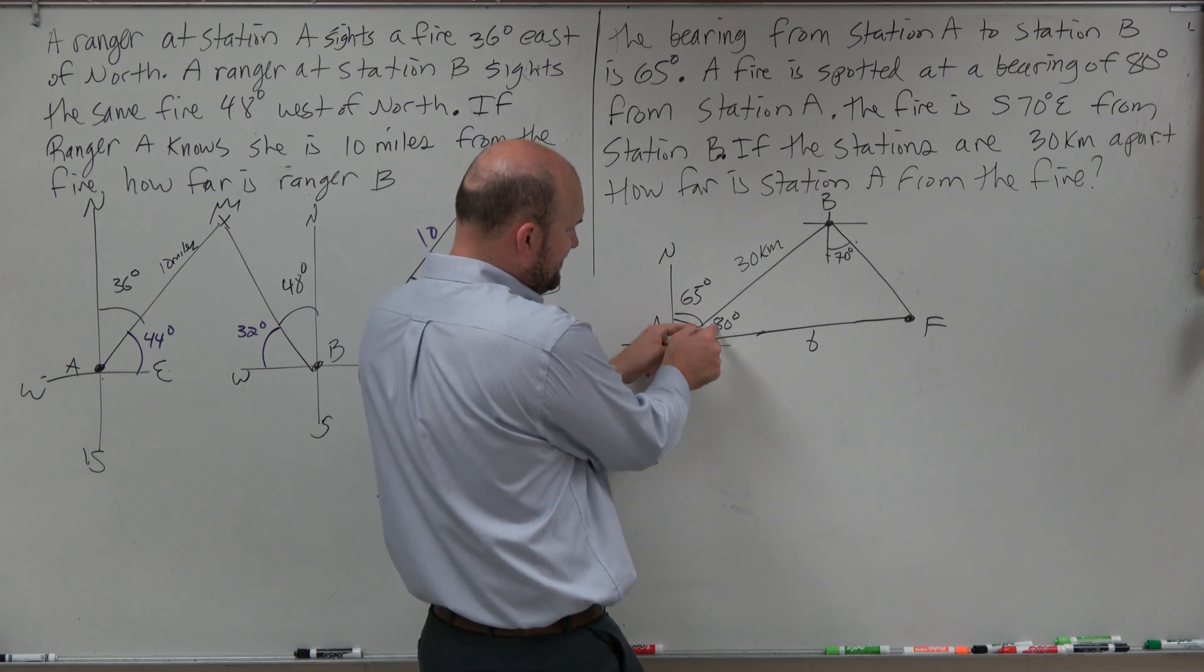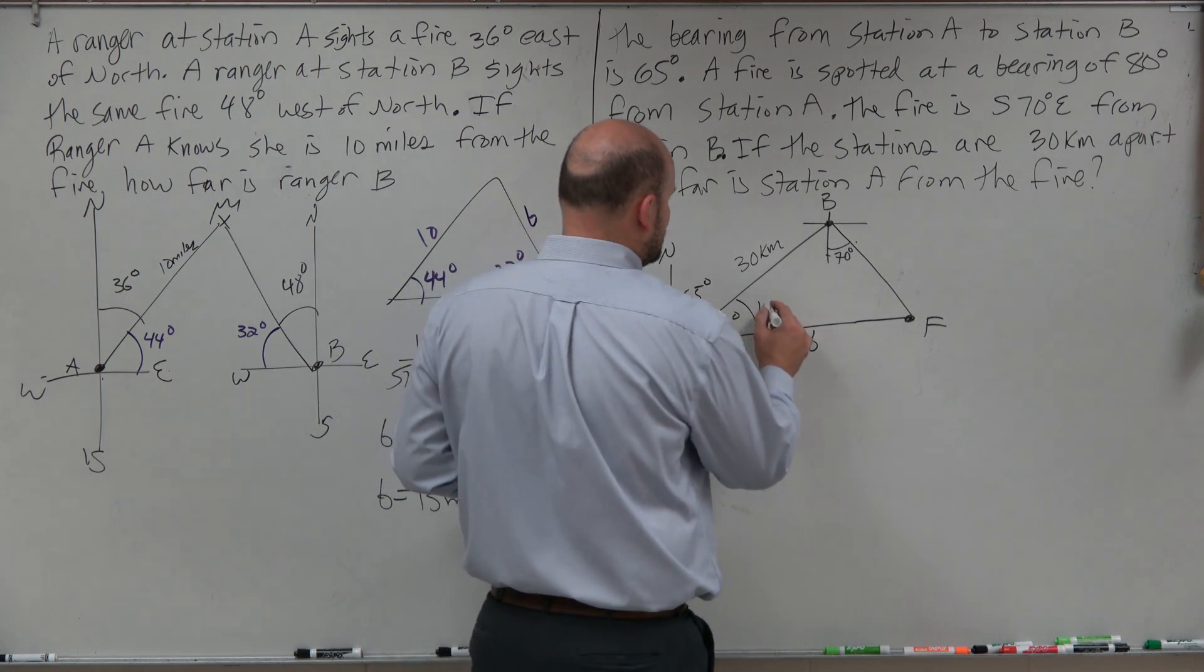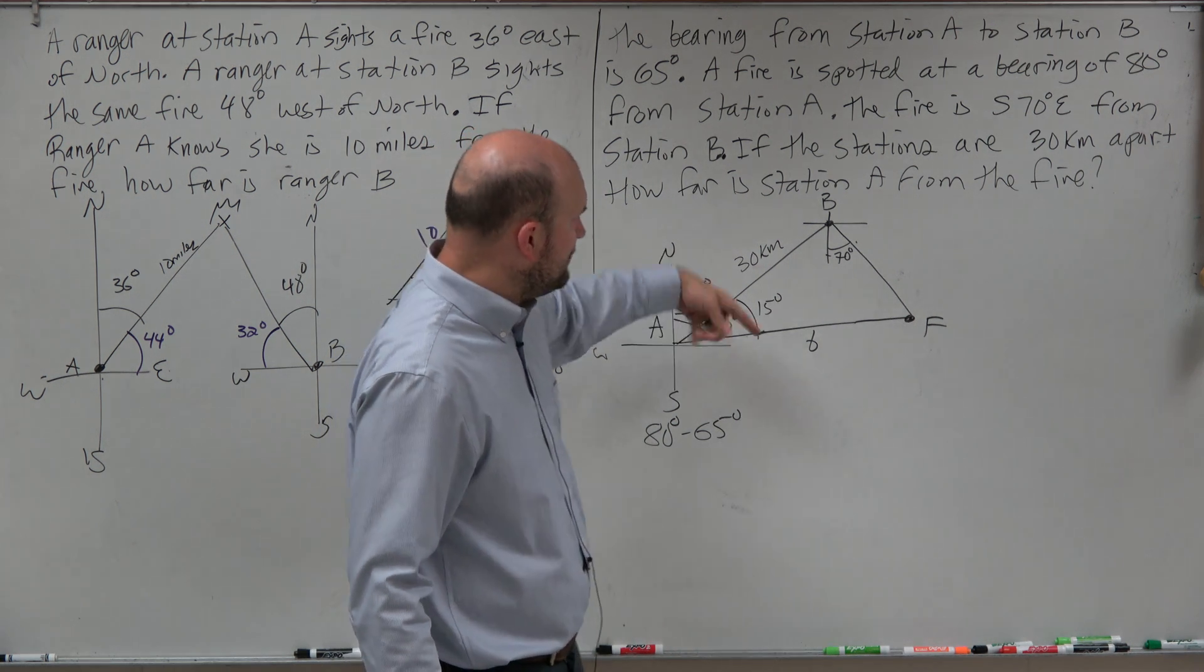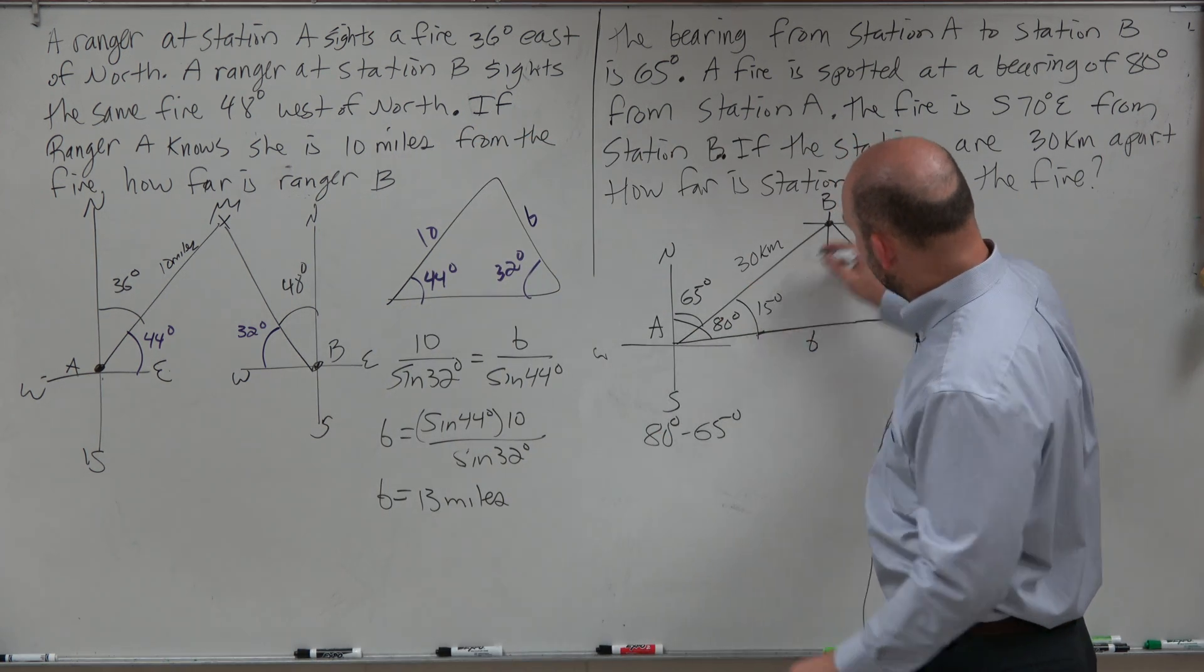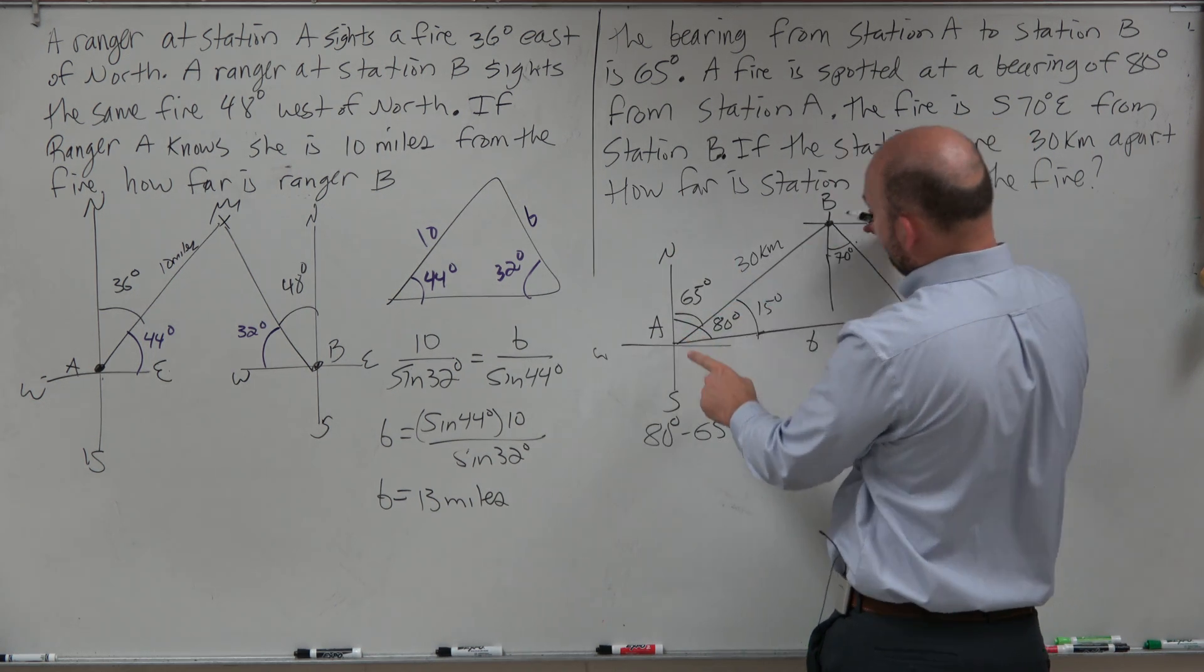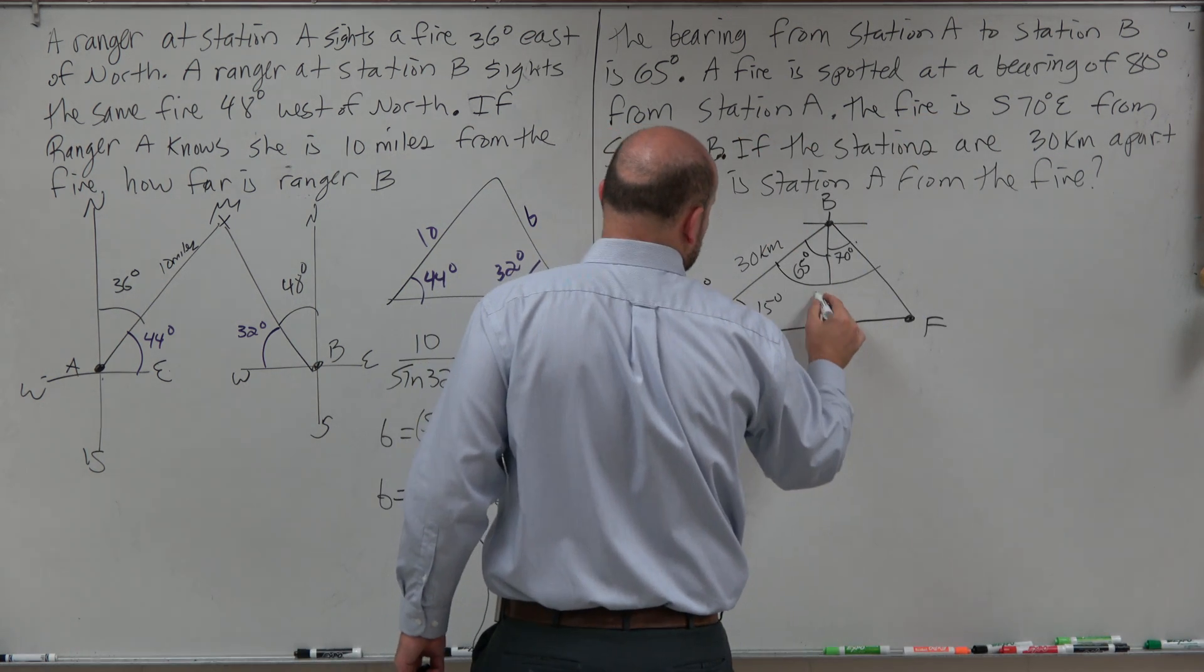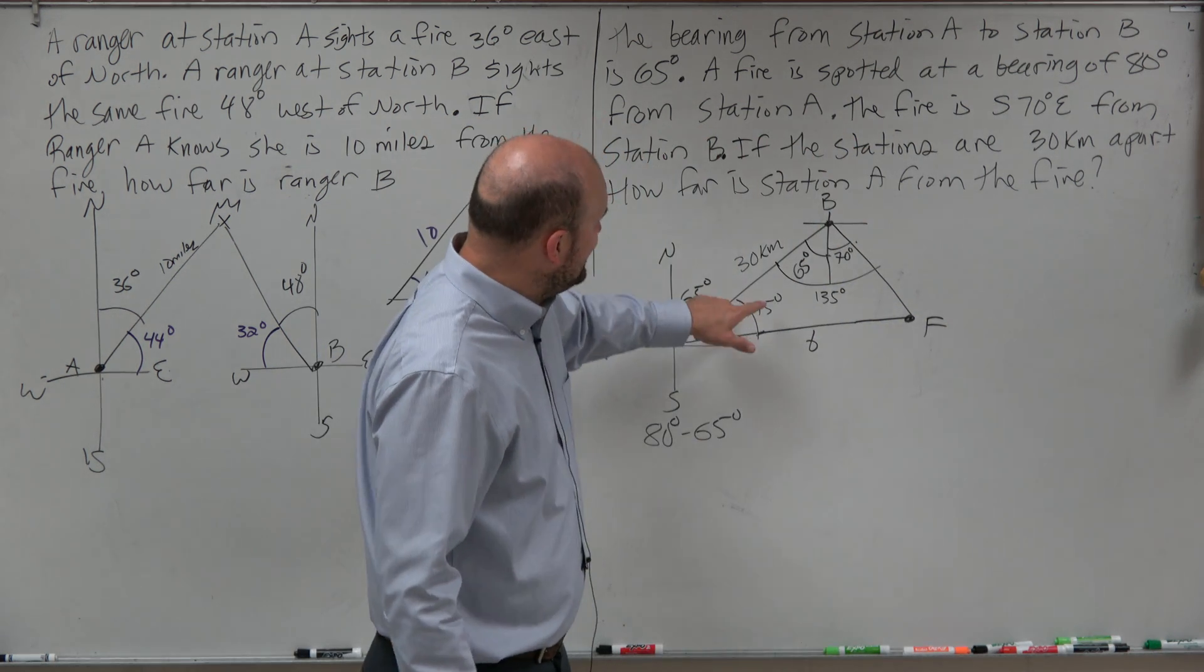From here to here is 80, and then from here to here is 65. So if I actually want to figure out what that angle is, I'm going to do 80 degrees minus 65 degrees, which is 15 degrees. So that's very important that that angle is actually 15 degrees. Now I need to figure out what this angle is. These north-south lines are parallel lines. So that means if this is 65 degrees, by using alternate interior angles, this angle is also 65 degrees.